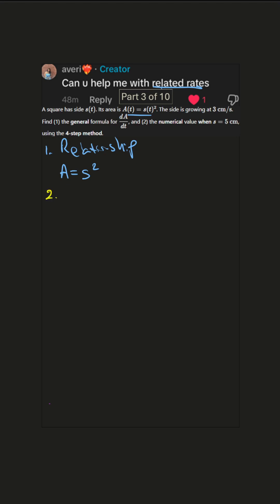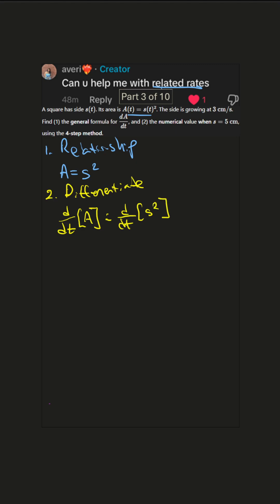Step two: differentiate with respect to time. Easy peasy. We take d/dt of both sides — A on the left equals d/dt of S squared. The left side is just dA/dt. On the right side we use the chain rule: we get 2S, and then times dS/dt.